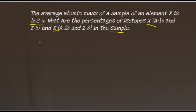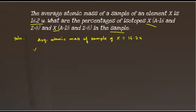Let us start with the solution of the problem. First, let us write what is given to us. We are given the average atomic mass of the sample of element x, which is equal to 16.2u (atomic mass units). As this sample is made up of only two isotopes, we can write the percentage of isotope x-18 as y, and the percentage of isotope x-16 as 100 minus y.